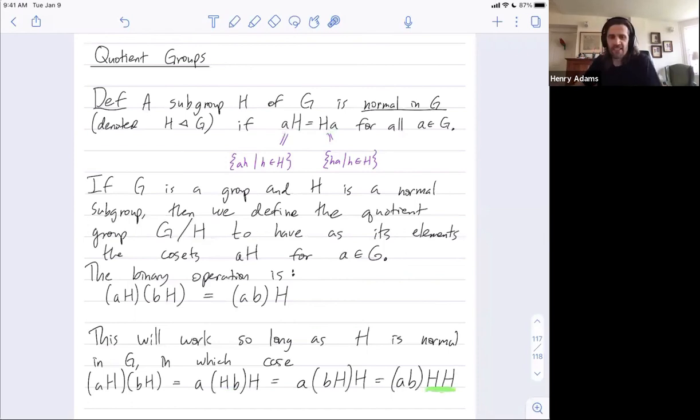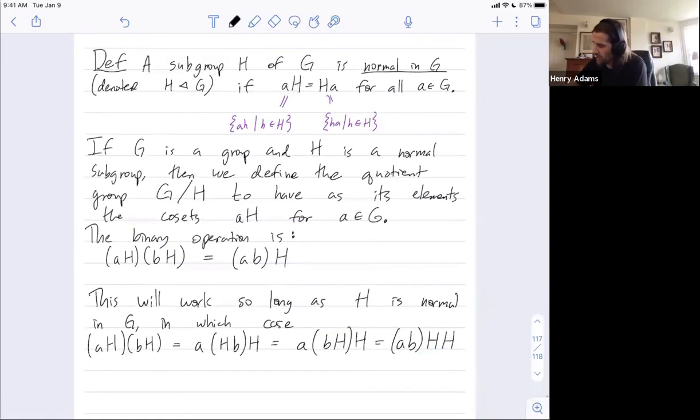This just means the set of all things that are of the form one element in H times another element in H. But H is a subgroup. So whenever I multiply two things in H, I get another thing in H. And furthermore, I could get anything in H just by taking one of these to be the identity. So it turns out this is just ABH.